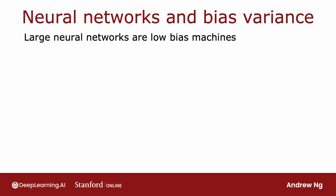And what this means is it gives us a new recipe to try to reduce bias or reduce variance as needed without needing to really trade off between the two of them. So let me share with you a simple recipe that isn't always applicable, but if it applies, can be very powerful for getting an accurate model using a neural network.